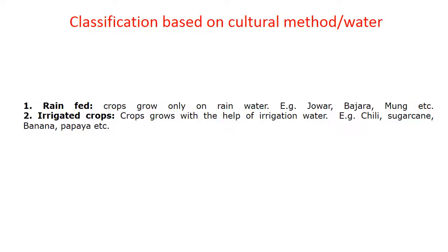Classification based on cultural methods or water supply includes rain-fed and irrigated. Rain-fed crops grow depending only on rainwater, like Jowar, Bajra, and Moong, which require moderate to low water supply. Irrigated crops are grown with the help of irrigation water, like Chili, Sugarcane, Banana, and Papaya.